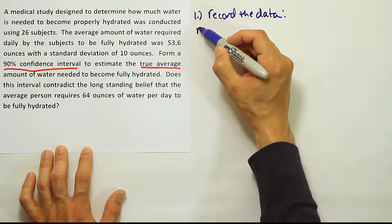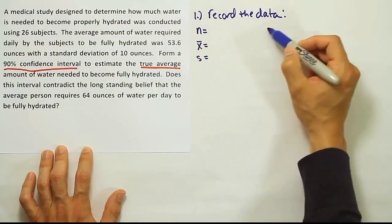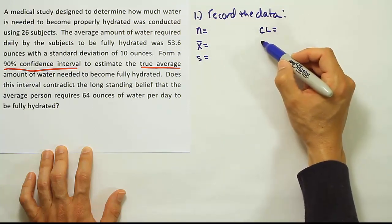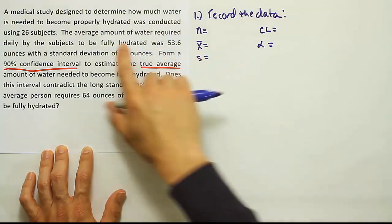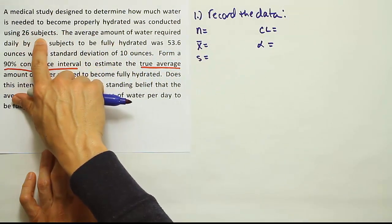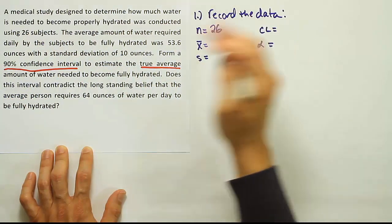Recording the data means that we should have n, we should have an x̄, we should have an s, we should have a confidence level, we should have an α. Let's get n for the problem. It says 26 subjects were studied, so 26 is going to be our n.